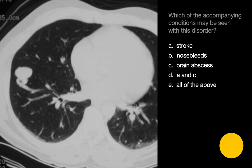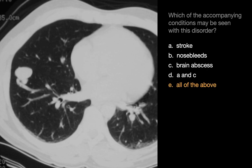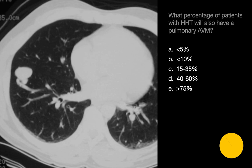Which accompanying conditions may be seen with HHT? The chest radiograph and CT images showed a pulmonary arteriovenous malformation, alluding to HHT as the disorder. Stroke, nosebleeds, and brain abscesses are all conditions that could be seen in the setting of HHT, so the answer is all of the above. What percentage of patients with HHT will also have a pulmonary AVM? The answer is C — 15 to 35%.